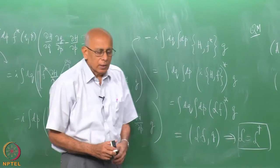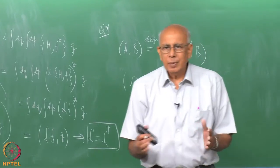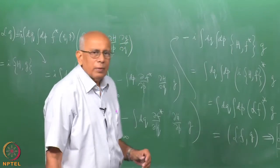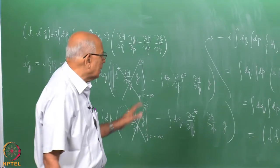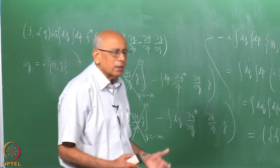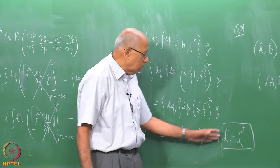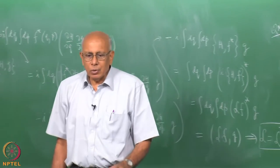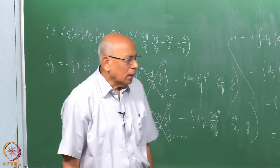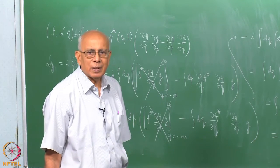The result is ⟨f|Lg⟩ = i ∫ dq dp (−δf*/δp · δH/δq + δf*/δq · δH/δp) · g, which equals ∫ dq dp (Lf)* g = ⟨Lf|g⟩. So L = L†: L is self-adjoint. One should distinguish between Hermitian, symmetric, and self-adjoint operators in infinite-dimensional spaces; what we have shown is self-adjointness, though we use the term Hermitian loosely.